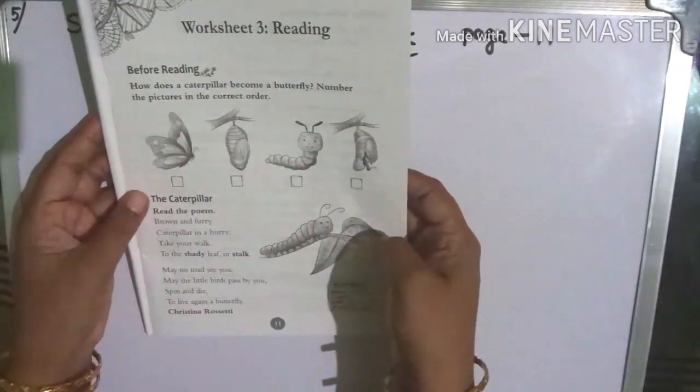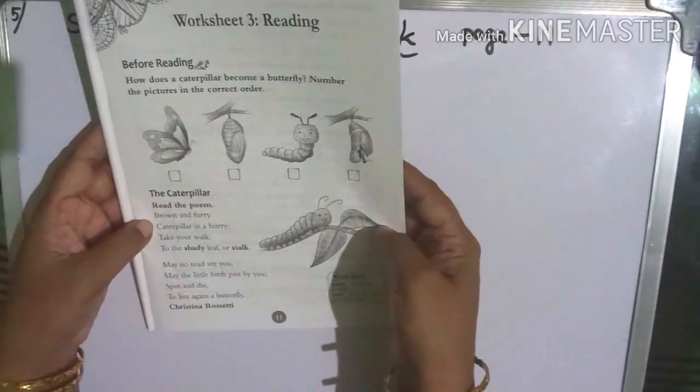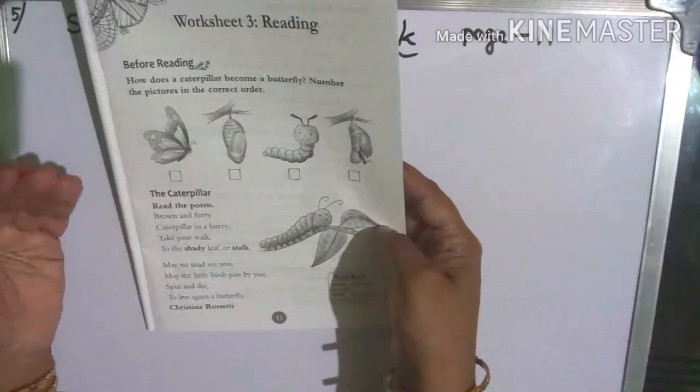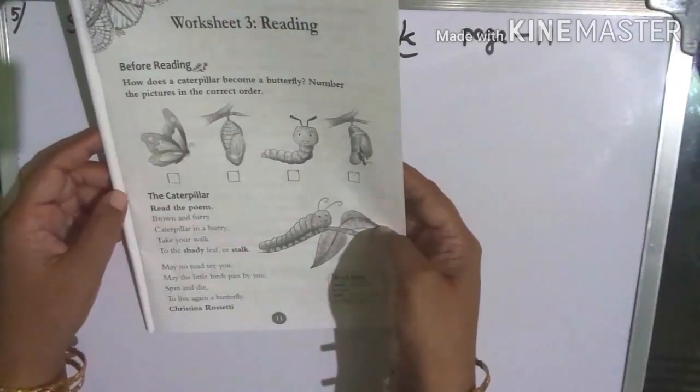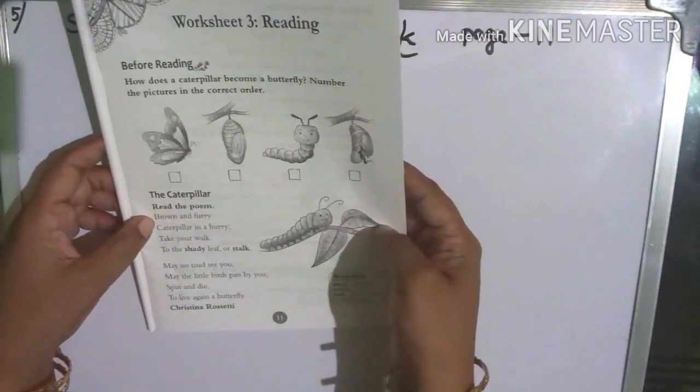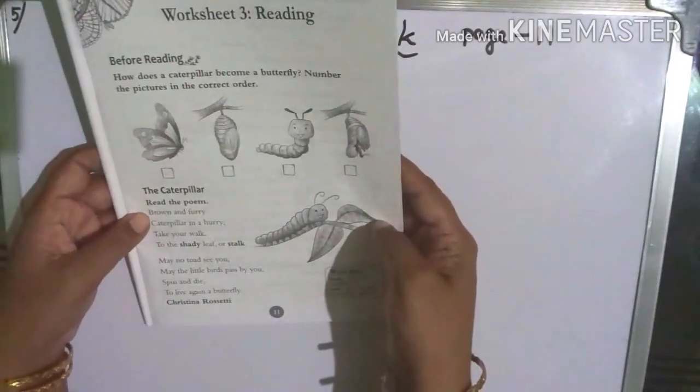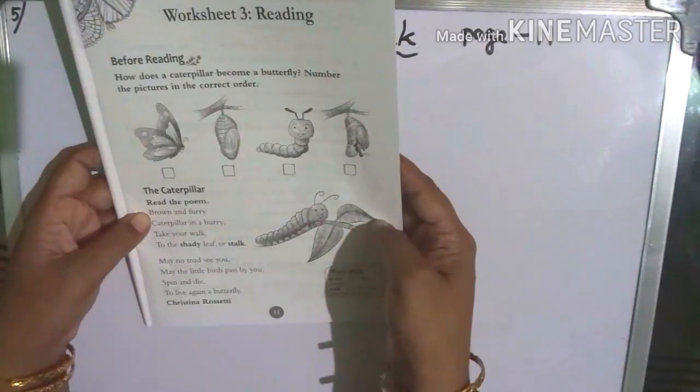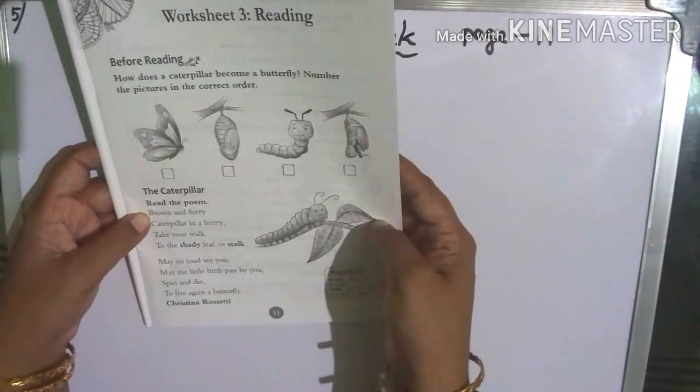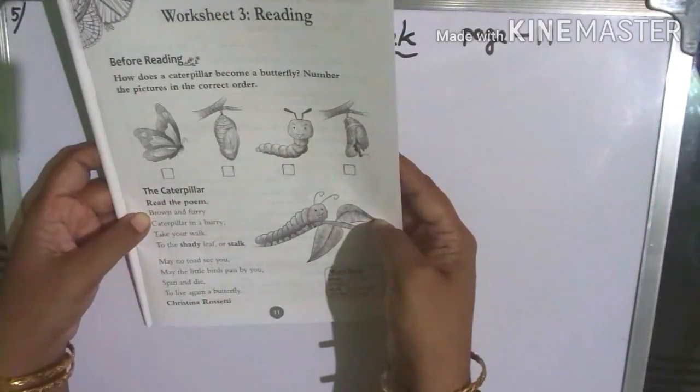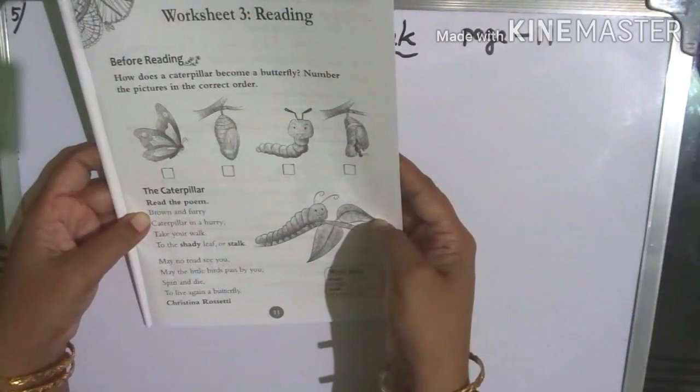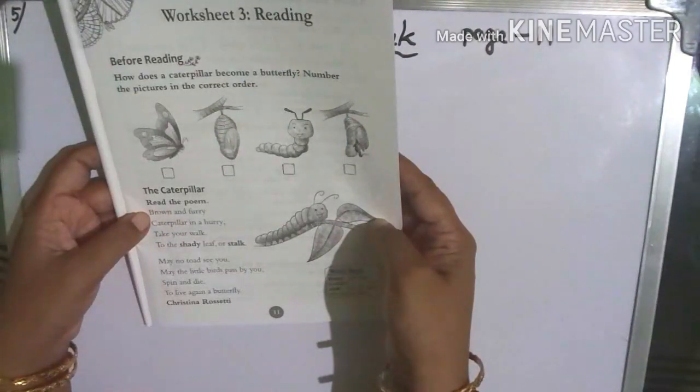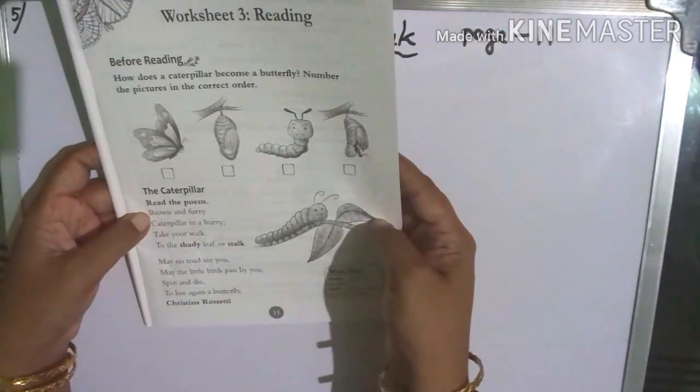So children, everyone see how a caterpillar can live again as a butterfly. So very nice poem. Brown and furry, caterpillar in a hurry, take your walk to the shady leaf or stalk. May no toad spy you, may the little birds pass by you, spin and die to live again a butterfly. This poem is written by Christina Rossetti.